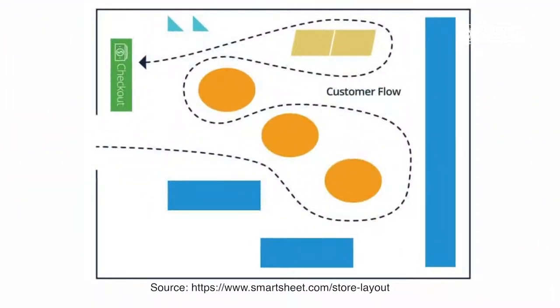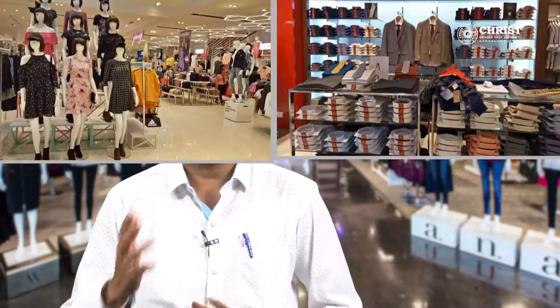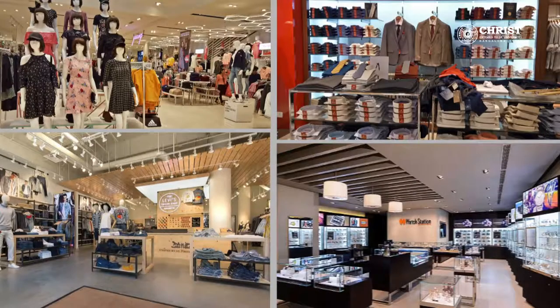As you can see here, the image of a free flow layout explains about the fixture spacing and huge aisle spaces inside the store. The examples of a few retail stores who adopt this kind of layout are Pantaloons, Lifestyle, Wildcraft, Samsonite and Levi's.